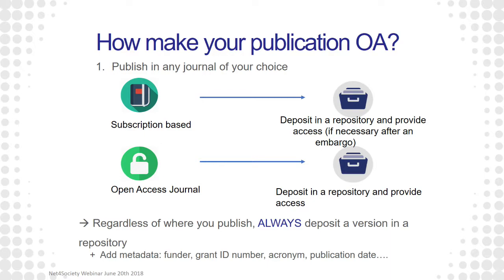How to make your publication open access: first and most important, publish in any journal you want. This can be an open access journal, but it can also be a traditional subscription-based journal. What you need to do is, at the moment you have published, deposit your research article into a repository.